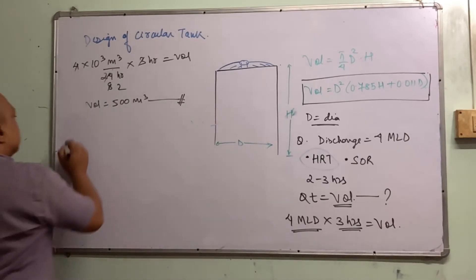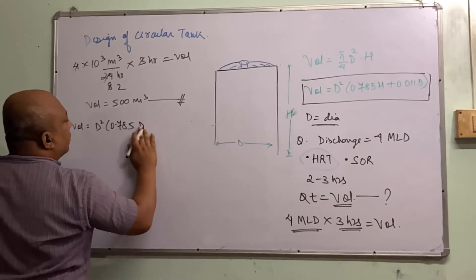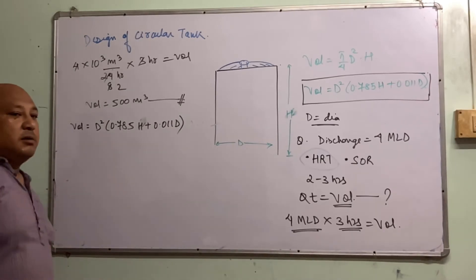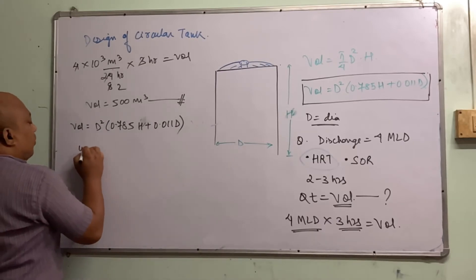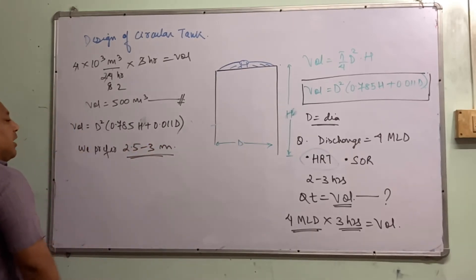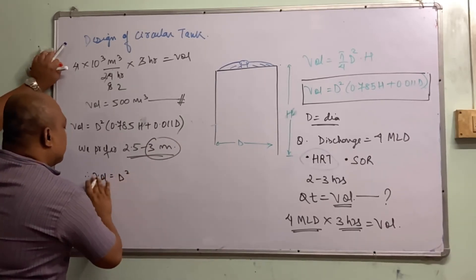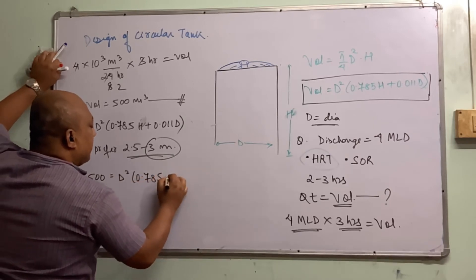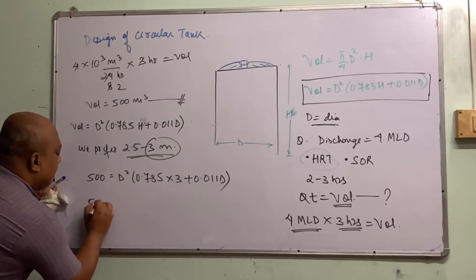To design, we use: Volume = D² × (0.785H + 0.011D). The depth of the tank should be around 2 to 4 meters, or sometimes 2.5 to 5 meters; we prefer 2.5 to 3 meters. Let's put H = 3 meters. So: 500 = D² × (0.785 × 3 + 0.011D) = D² × (2.355 + 0.011D).